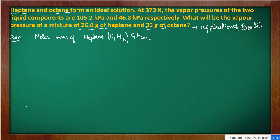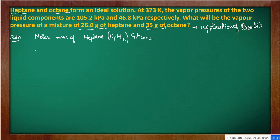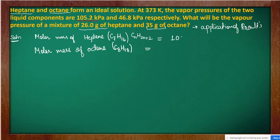Now we calculate the molar mass of heptane and octane. For octane, the formula is C8H18. Carbon has a molecular weight of 12, so 12 × 7 = 84, plus 16 hydrogens gives a total of 100 grams per mole for heptane. For octane, 12 × 8 = 96, plus 18 hydrogens gives a total of 114 grams per mole.